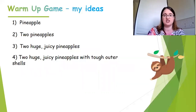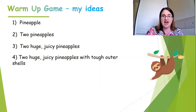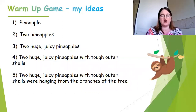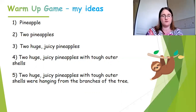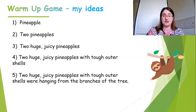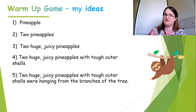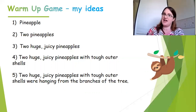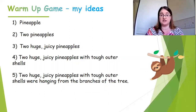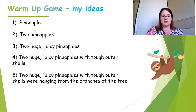Then I added in my prepositional phrase: two huge, juicy pineapples with tough outer shells - 'with' is that preposition at the beginning. And then I turned it into a sentence: 'Two huge, juicy pineapples with tough outer shells were hanging from the branches of the tree.' Just one verb chain - so it's a simple sentence. Check each stage: have you got just a noun? Then determiner and noun? Then two adjectives with that comma? Then a prepositional phrase? And just one thing happening for the simple sentence. We'll have another go tomorrow with a different noun.